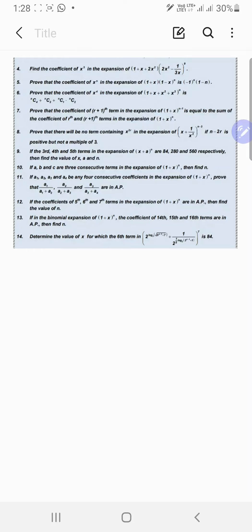We are supposed to find the coefficient of x cubed in the expansion of (1 + x + 2x²) into (2x² - 1/(3x))^9. It's some mess - 2x² minus 1 upon 3x to the 9th power. So let's start with the first one, which is 1.